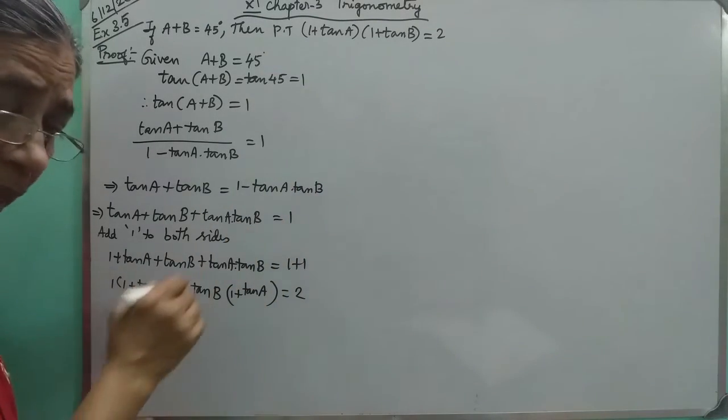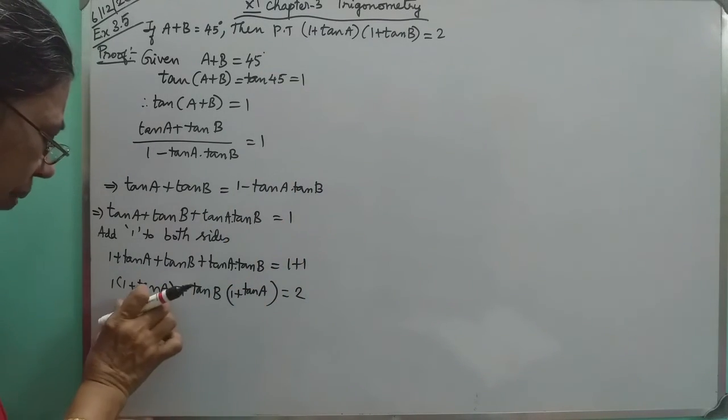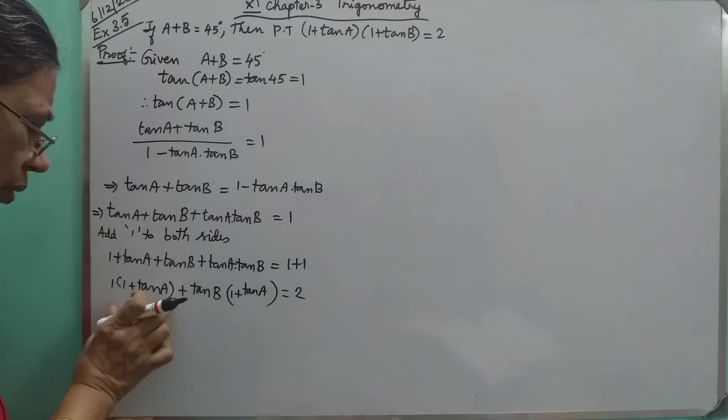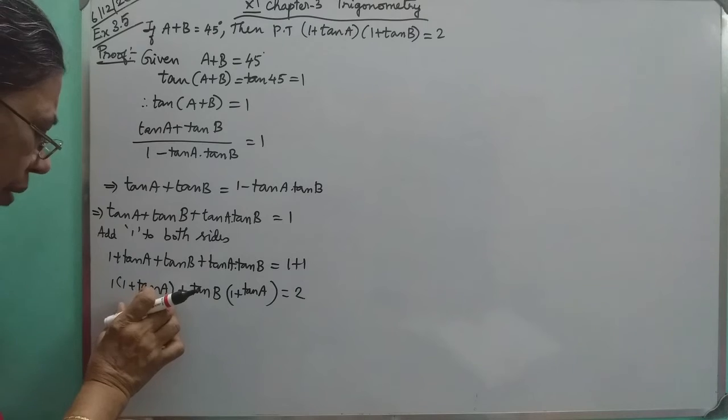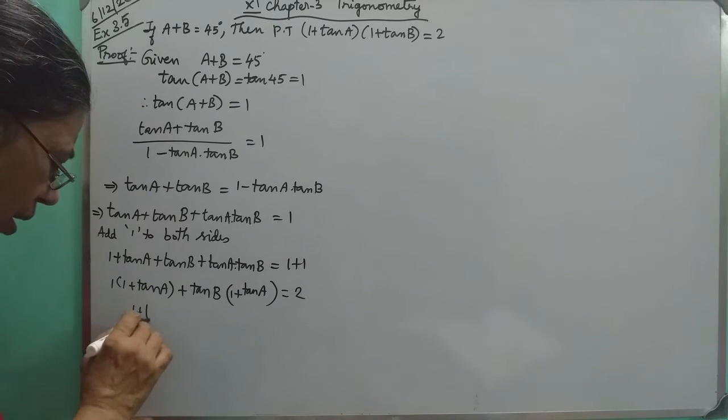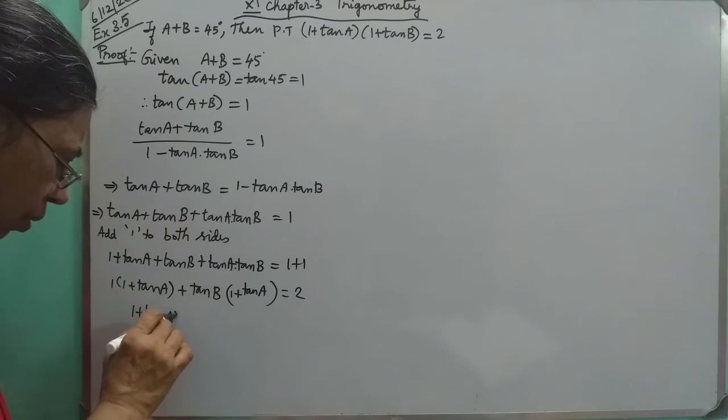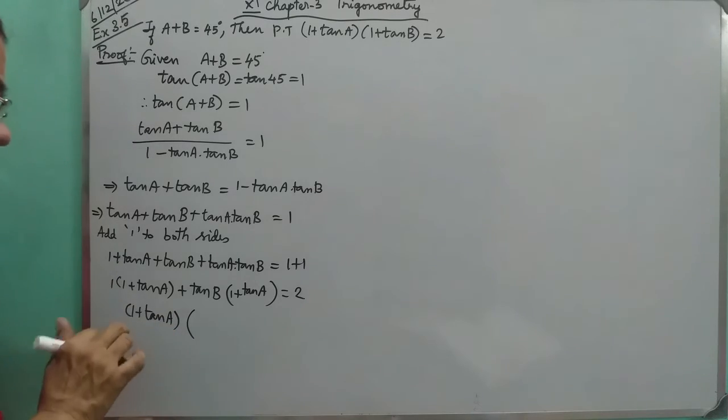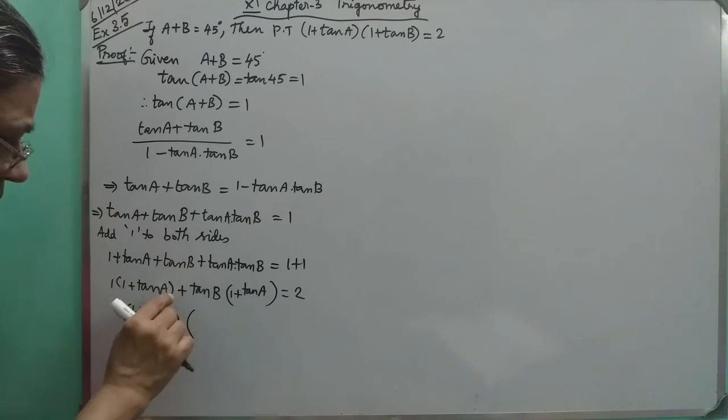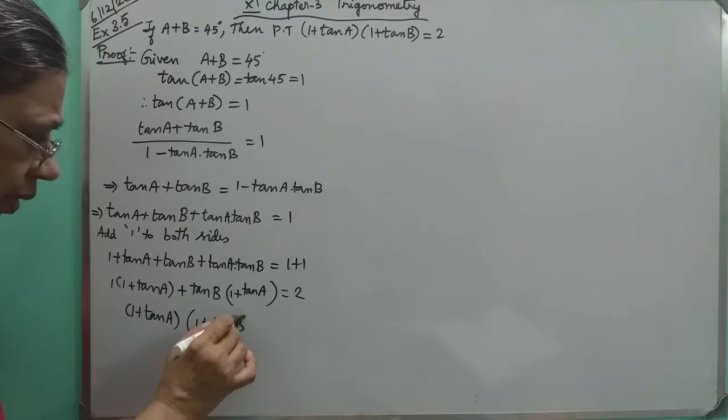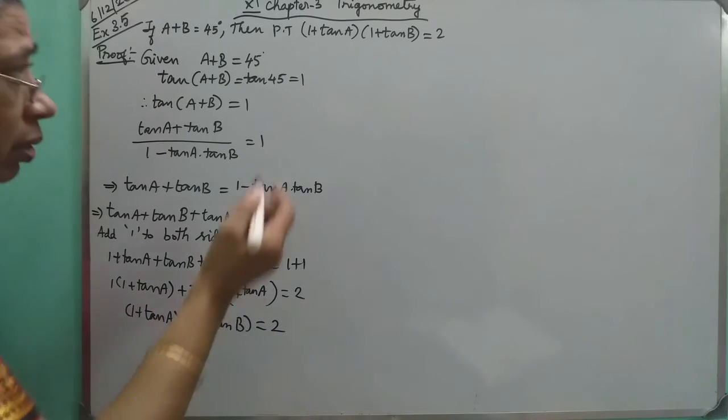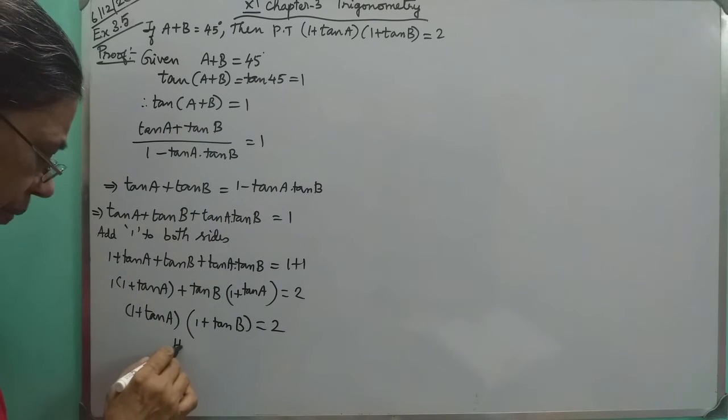So we have 1 plus tan A into 1 plus tan B is equal to 2. So this only we have to prove. Hence, proved.